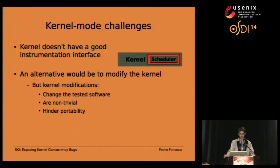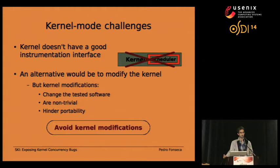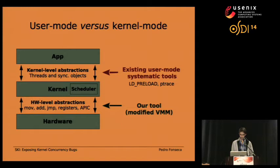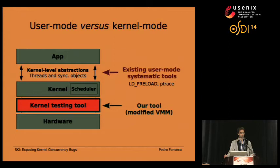In this work, we explore a different design where we don't have to modify the kernel we want to test. To this end, we go one step below the kernel to the hardware level of abstraction, building a tool that uses a modified virtual machine monitor. At this level, we only have assembly instructions like move, add, jump — we can see register values and memory values, but don't know anything about threads or synchronization objects. We place our tool between the kernel and the hardware, without changing the kernel we're testing.